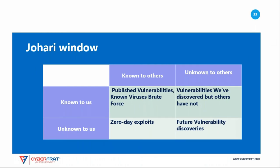As you conduct your threat identification and classification exercise, it is helpful to keep a classification matrix known as a Johari Window. The Johari Window classifies information into categories based upon whether it is known to us and whether it is known to others. This window has four quadrants.